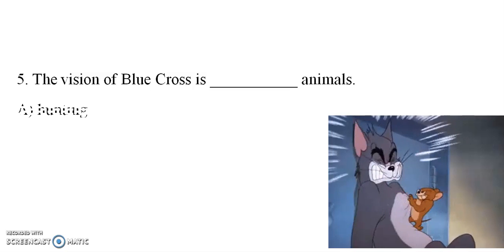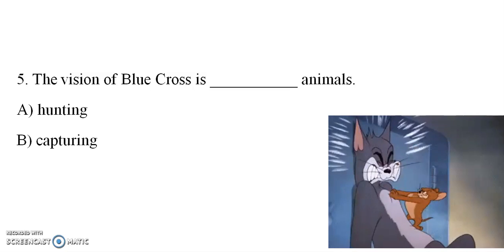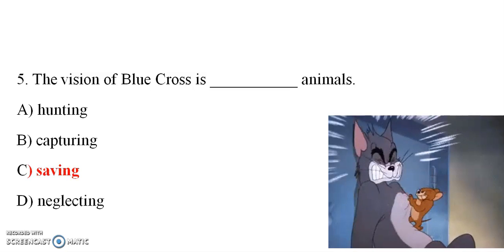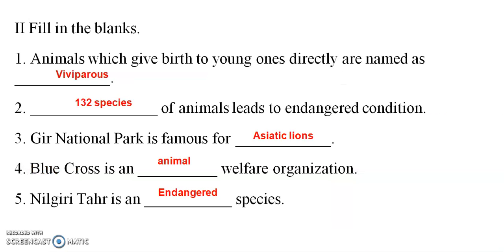The answer is saving animals. Animals which give birth to young ones directly are named as viviparous. Under 32 species of animals are in endangered conditions. Guindy National Park is famous for its genetic lines. Blue Cross is an animal welfare organization.